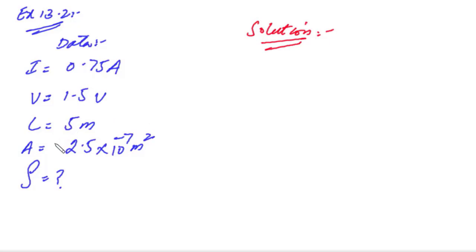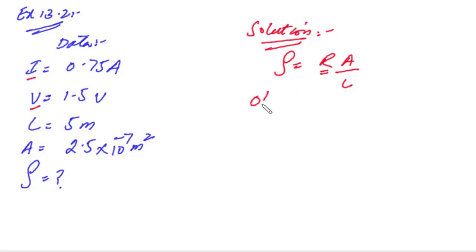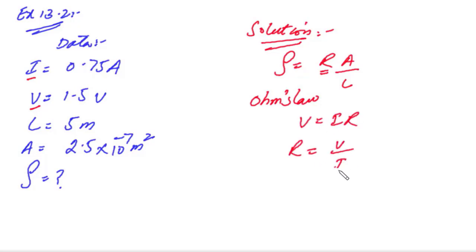We have current I, voltage V, and length L. The resistivity formula is ρ = RA/L. We have A and L but R is not given, so we will use I and V. According to Ohm's Law, V = IR, so R = V/I. With V = 1.5 and I = 0.75, R comes out to 2 ohms.